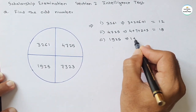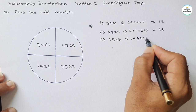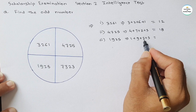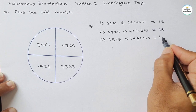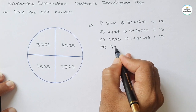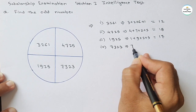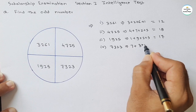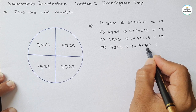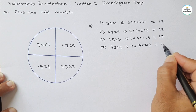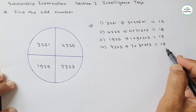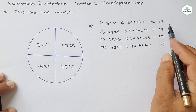For the third number, 1925 — summation: 1 plus 9 plus 2 plus 5. That is 1 plus 9 equals 10, then 10 plus 2 equals 12, then 12 plus 5 equals 17. For the fourth number, 7323 — summation: 7 plus 3 plus 2 plus 3. That is 7 plus 3 equals 10, then 10 plus 2 equals 12, then 12 plus 3 equals 15.